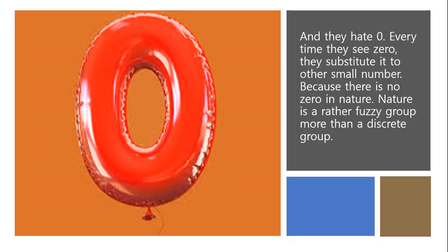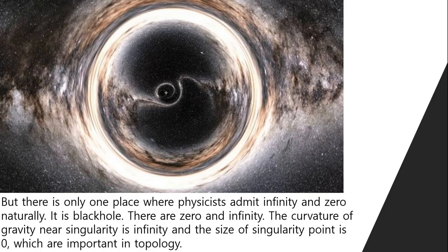And they hate zero. Every time they see zero, they substitute it with other small numbers, because there is no zero in nature. Nature is a rather fuzzy group more than a discrete group. But there is only one place where physicists admit infinity and zero naturally — it is the black hole. The curvature of gravity near the singularity is infinity, and the size of the singularity point is zero, which are important in topology.